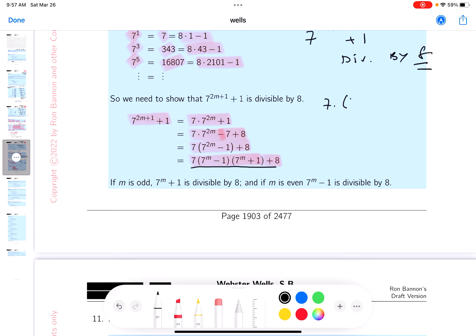7, 7M minus 1, 7M plus 1 divides by 8. By the way, I know 8 divides by 8. That's not an issue there. So I'm kind of looking at it. And let's take a look at that. So let's put this down.